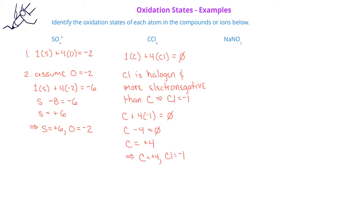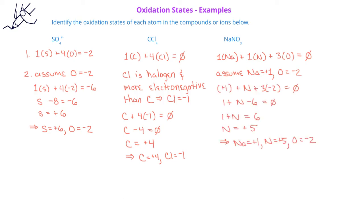Finally, we have the neutral ionic compound sodium nitrate. The sum of the oxidation states of the one sodium, the one nitrogen, and the three oxygens must equal zero. Since sodium is an alkali metal in a compound, its oxidation state is plus one, and the oxide ions have an oxidation state of minus two. Plugging these values into the equation, the nitrogen atom in sodium nitrate must have an oxidation state of plus five.